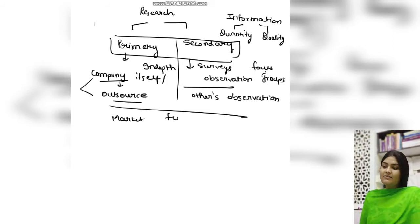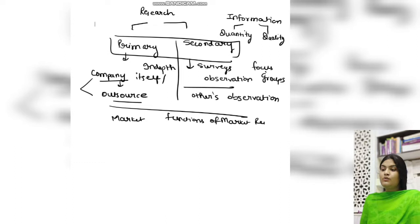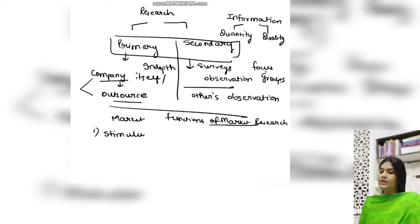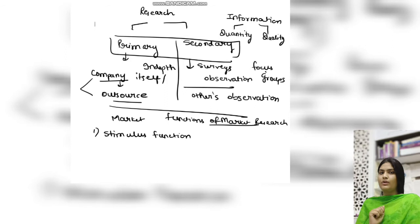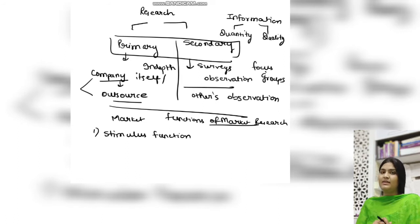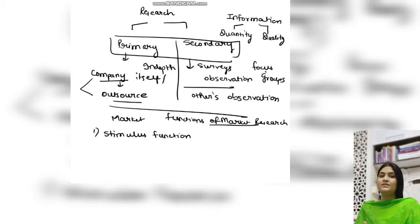There are some functions of marketing research. Whenever you do market research, it can act as a stimulus — there is a stimulating function. You want to take a decision whether to enter a particular market or not. So to get that idea, you figure out what type of customers are there, what are their characteristics, their attributes, what do they like, what do they not like. The stimulus is given by market research so as to take the decision.